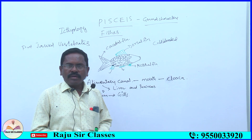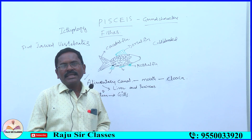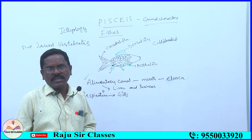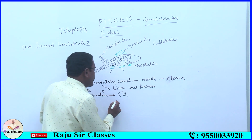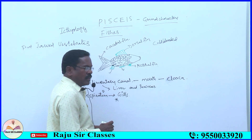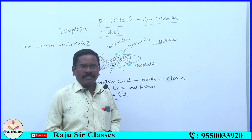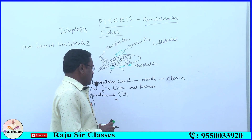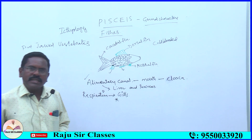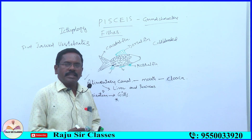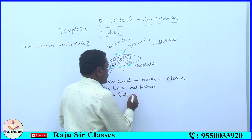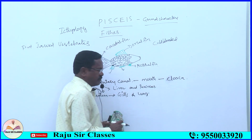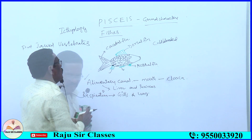In the majority of fishes, branchial respiration takes place. In very few fishes, a single lung is present and respiration through lungs is called pulmonary respiration. So in the majority of fishes, branchial respiration takes place.